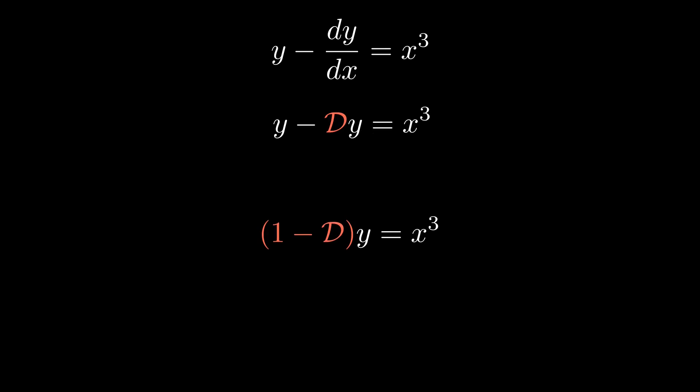This time we actually have to address the elephant in the room. How do we go about finding the inverse of something like 1 minus D? The trick is to notice the product rule can give us something that looks like this. In particular, the D of e to the minus x times y is given by e to the minus x times Dy, plus y times D e to the minus x, which is just minus e to the minus x.